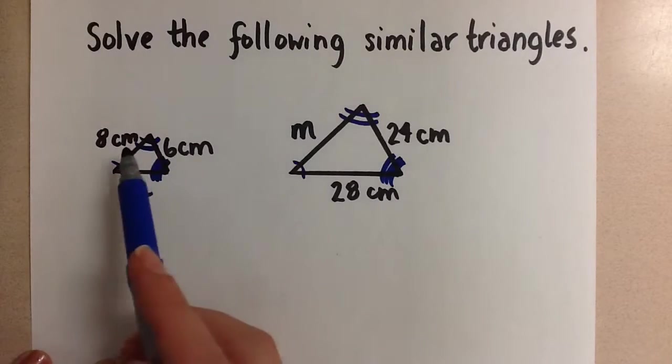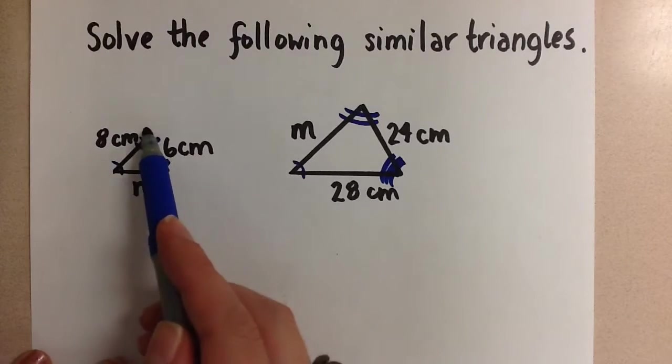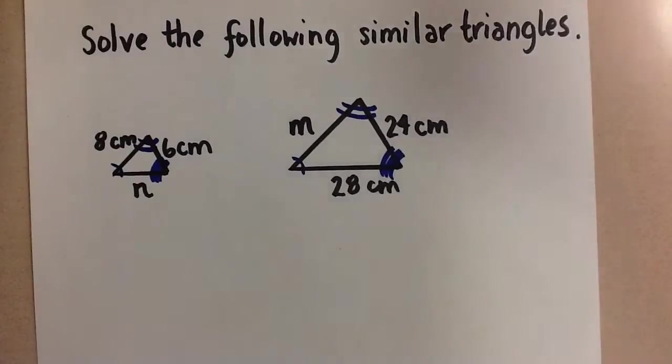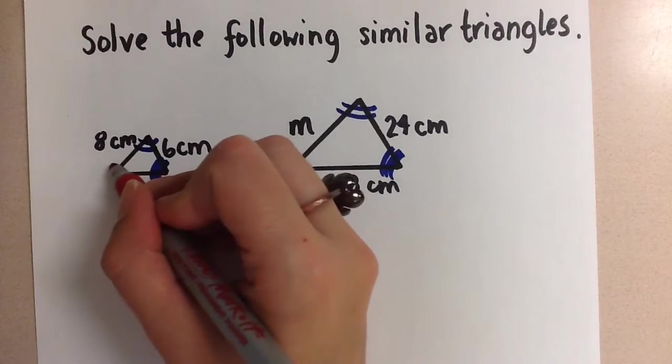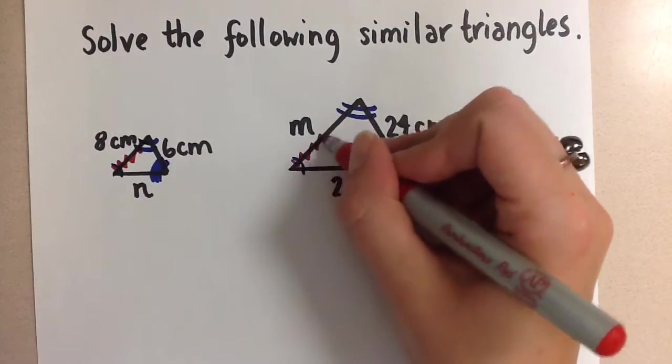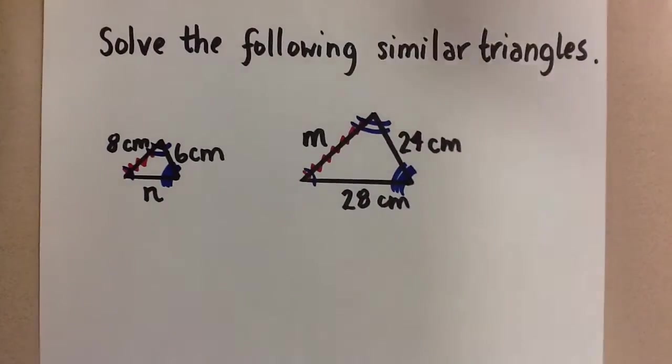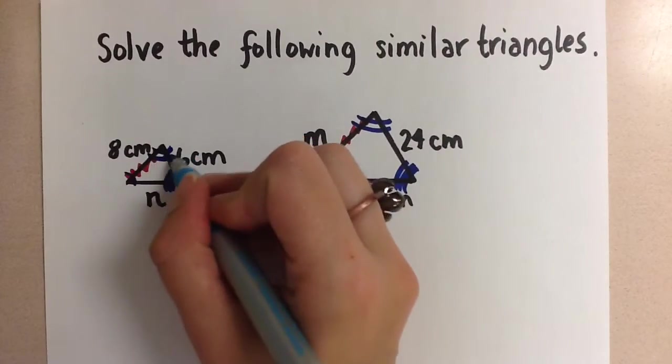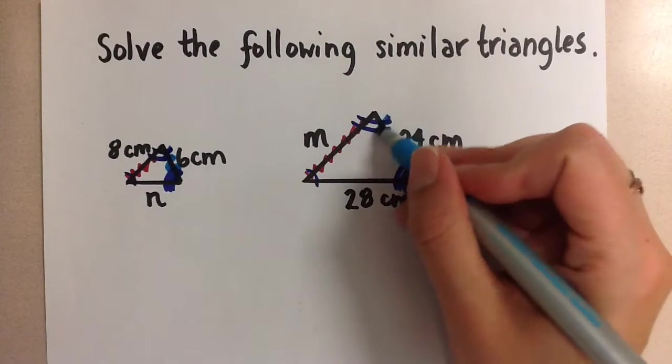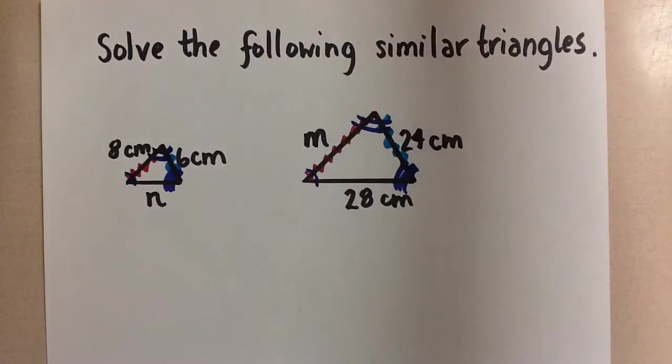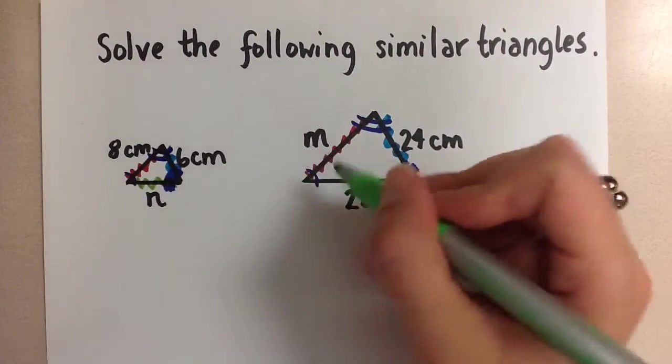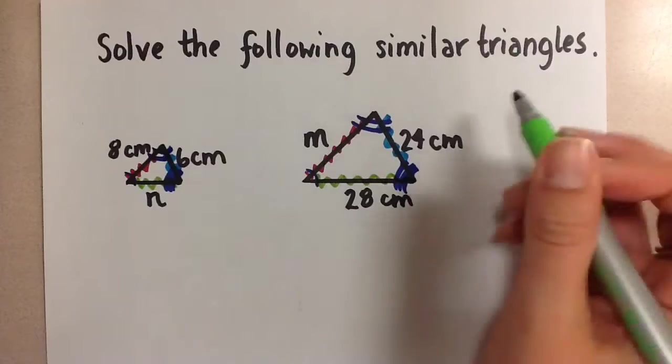And then this side, let me do it like this, this side here is proportional to this side, then this side is proportional to this side, and this side is proportional to this side.